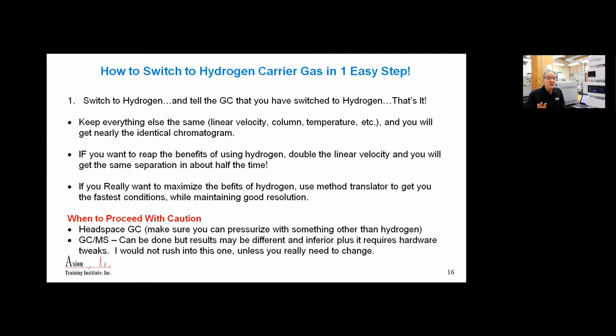When to proceed with caution. This is not a panacea. There are some examples where you do not really want to switch to hydrogen. Let me give you two examples. If you're doing headspace, be careful. Older headspace instruments would pressurize the vial with the carrier gas. If you're using hydrogen carrier gas, you're pressurizing with hydrogen. You made an explosive mixture in an enclosed container. We don't like doing that inside laboratories because it could become a pipe bomb and explode. Most modern headspace autosamplers have the ability to accept a pressurization gas separate than the carrier gas. If you're doing headspace, you must make sure you're pressurizing with nitrogen or helium, and then that you are using hydrogen as carrier gas.